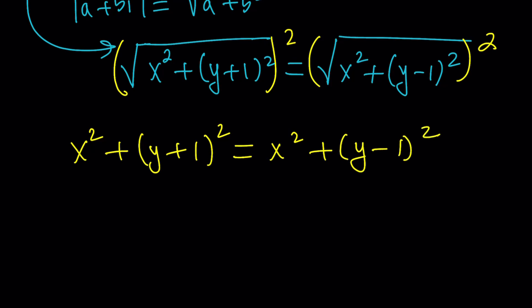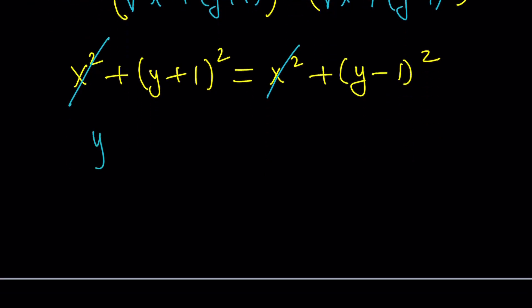So what do you see? X squared is going to cancel out. So we can cancel that out. And we end up with something like this. Let's expand both sides. We could also subtract and use difference of two squares. No big difference. Y squared plus two Y plus one equals Y squared minus two Y plus one.